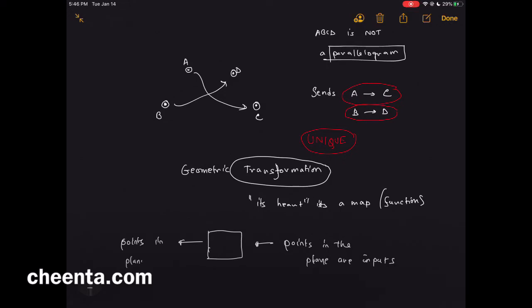Basically, you send in a point in this magic box, which is the geometric transformation, which is the machine. So you throw in this point A and you get output as another point, in this case C.